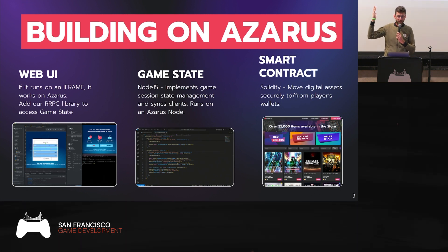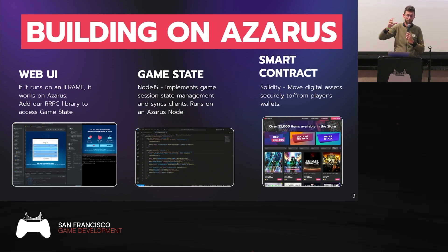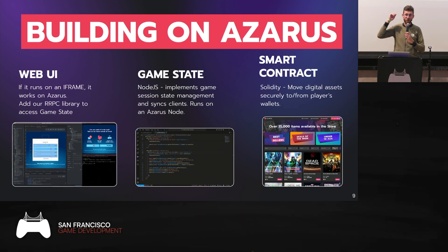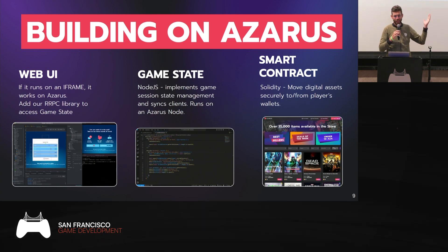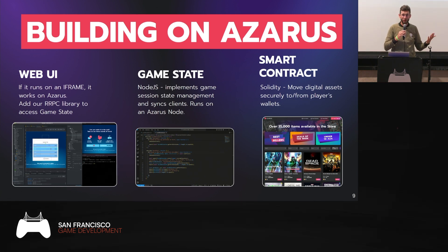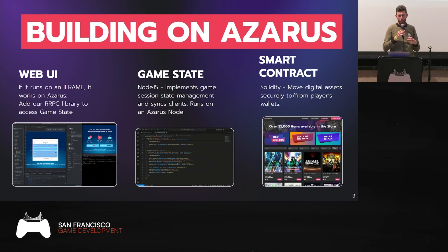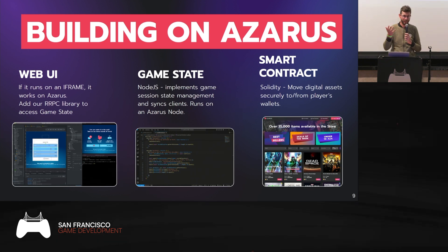Building on Azarus is super simple. You make a very small game in an iframe — 30 seconds, core game loop, focusing on one key repeatable simple element. You implement your game state: what happens when you click that button, how do we update the state? We provide infrastructure to keep that state updated and on point. Then the smart contract decides: if I win, do I get a reward? This is how all the games you find today on Twitch that you can interact with are built — using those three components.